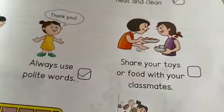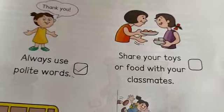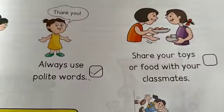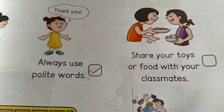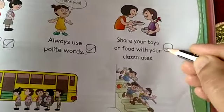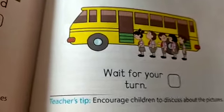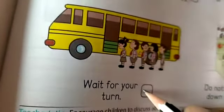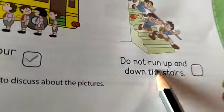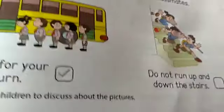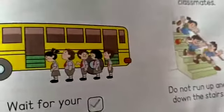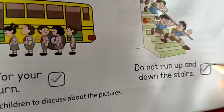Next one: share your toys or food with your classmates — sharing is a good manner, so put a right mark. Wait for your turn — waiting for your turn is also a good manner, so put a right mark. Do not run up and down the stairs — this is also a good manner, so put a right mark.